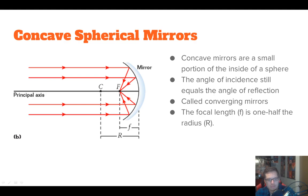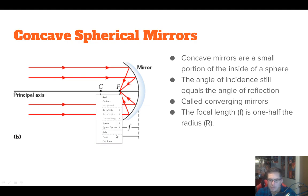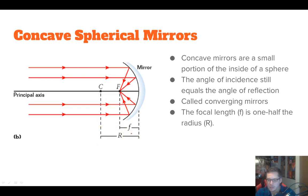All right, gang, here we go. This is for physics, unit eight, part three. We're talking about curved mirrors. This will probably be one of the more lengthier parts in the unit here.